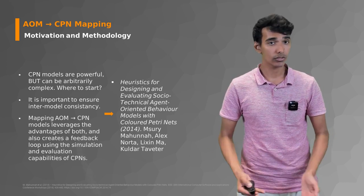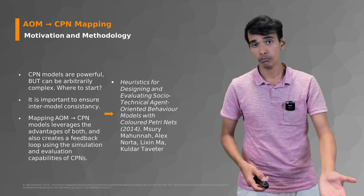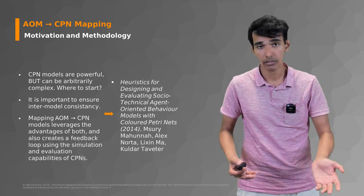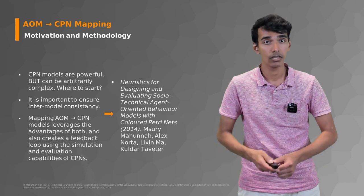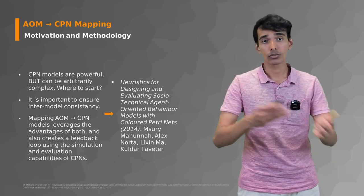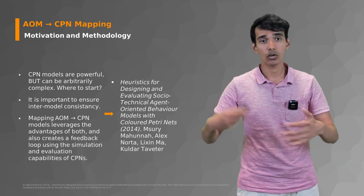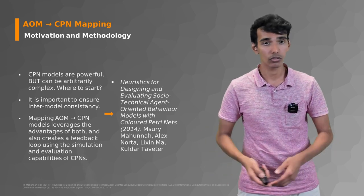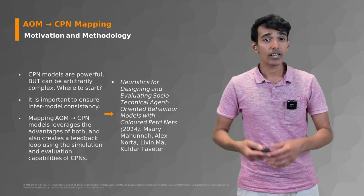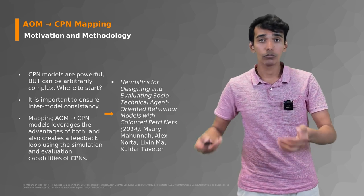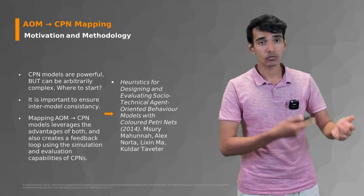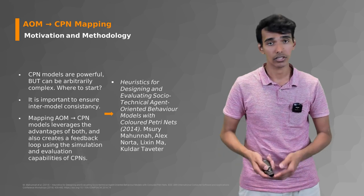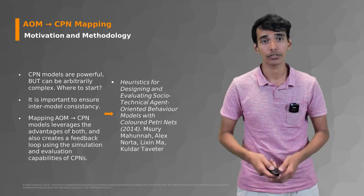In theory, you can have an AOM model that is very easy for stakeholders to understand because it's very graphical. Then you can map that to CPN and use all the simulation and evaluation capabilities, state space models, etc. And if you figure out there is an issue, you can go back, change your AOM model, and the cycle can basically continue until you're satisfied.